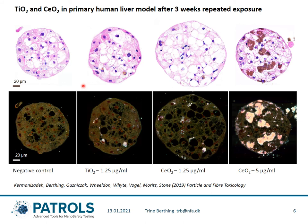The final example is from an in vitro model which has been developed for use with nanomaterials in PATROLS. These are small spheroids made from primary human liver cells. In PATROLS, these small spheroids have been exposed for three weeks to titanium dioxide and cerium dioxide. In this study we were curious whether, if we exposed these spheres to nanomaterials, they would simply only touch the outer surface of the spheres.